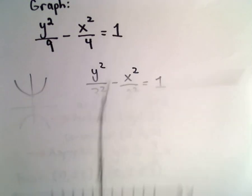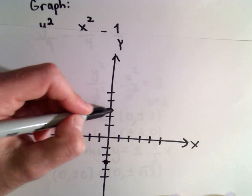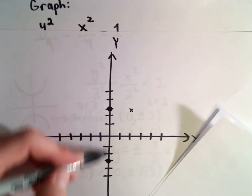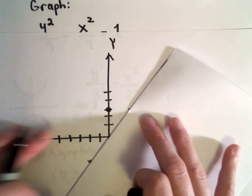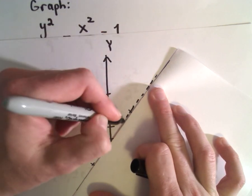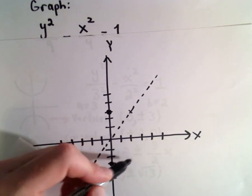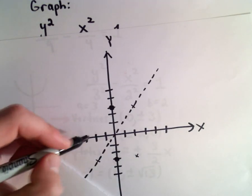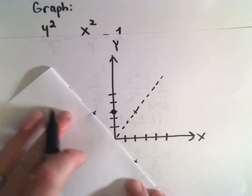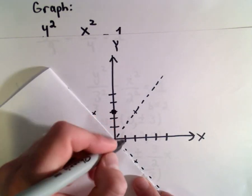One of our asymptotes is y equals (3/2)x. It goes through the origin and has a slope of 3/2, so up 3 over 2. I'll put a mark there and another one over here. We make our asymptotes dotted — so there's one asymptote. The other asymptote goes down 3 over 2, so there's another one.